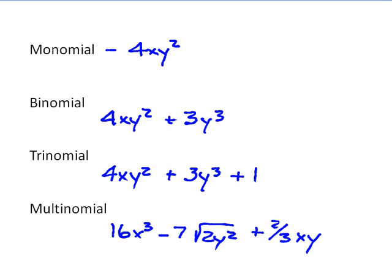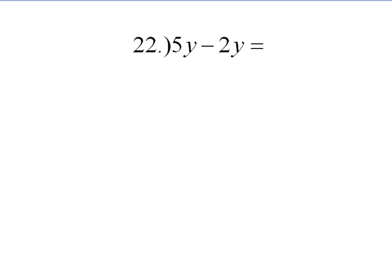All right. Let's get going with adding and subtracting monomials, binomials, trinomials, and multinomials. Here's our first one, 5y minus 2y. This is the same thing as saying 5 minus 2y, which would equal 3y. Now, I'm going to stop writing this step out because I think you can understand how it works. If you still need to write this step out, then do so for a while.